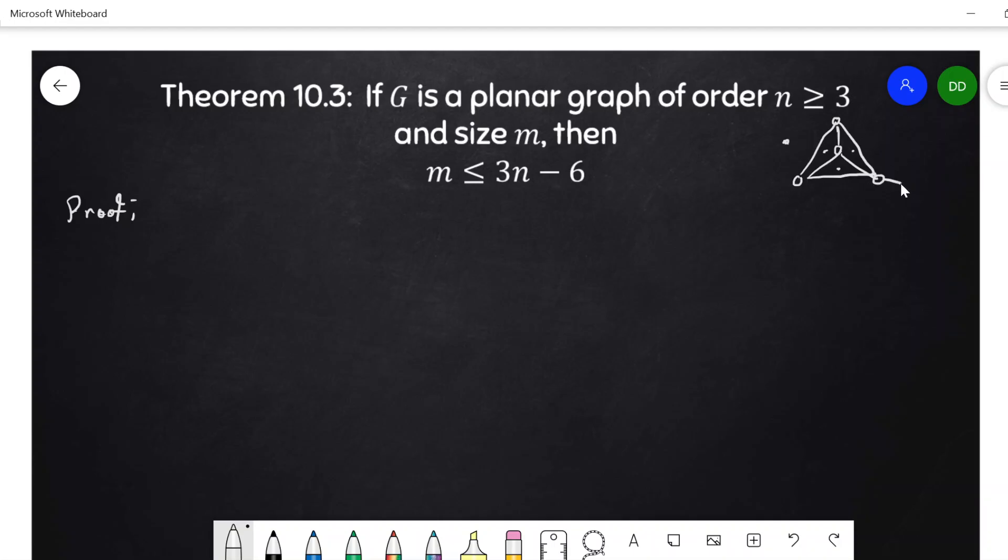However, what if I added, say, an edge, a pendant edge coming off here, then this edge would only lie on the boundary of the exterior region outside there.